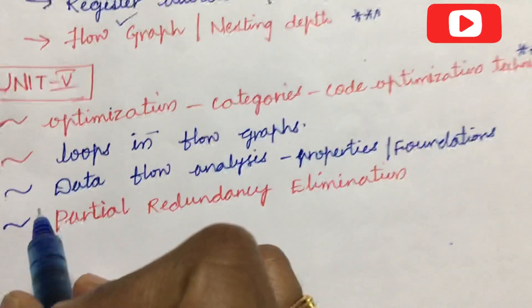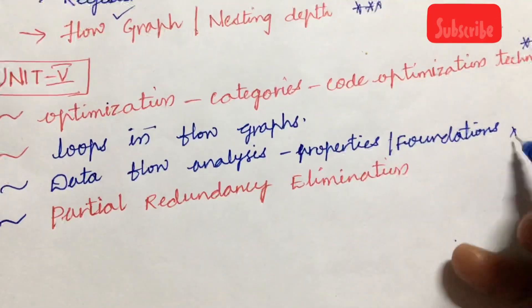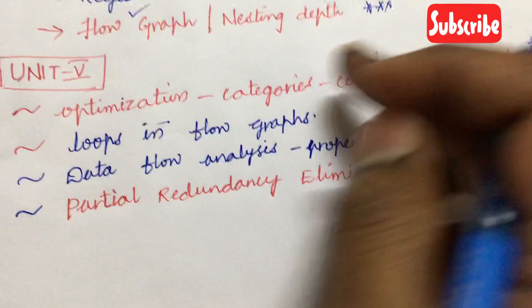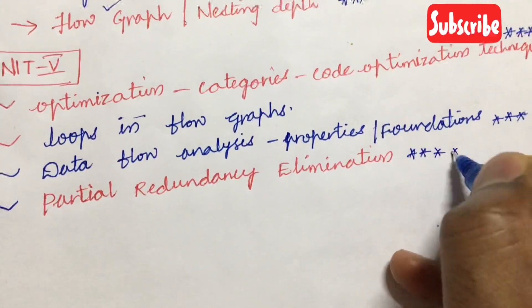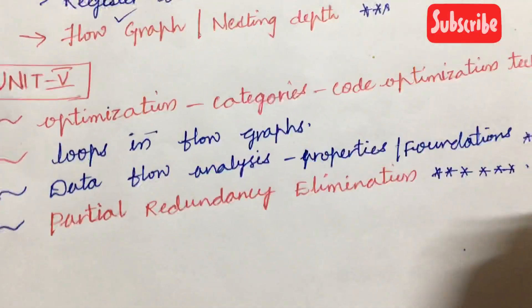The loops in flow graphs as well as data flow analysis, its properties and foundations, may be the seven-mark question or eight-mark question, dear students. Partial redundancy elimination is also asked several times. We can expect even this to be also one of the gunshot questions for this time. This is all about the Compiler Design important concepts which you are supposed to prepare for your end examination.